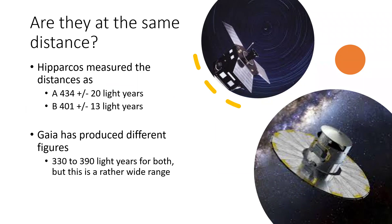And we can do that from the ground, but we can also do it with satellites. And the Hipparcos satellite was dedicated to the task and told us that the A star was 434 plus or minus 20 light years away, and the B star a little bit nearer, 401 plus or minus 13. So somewhat different, and therefore perhaps just a line of sight effect.